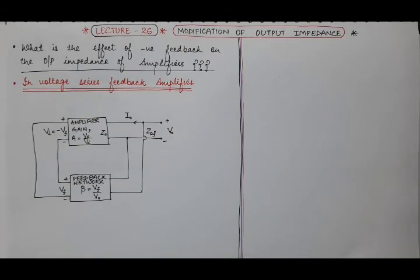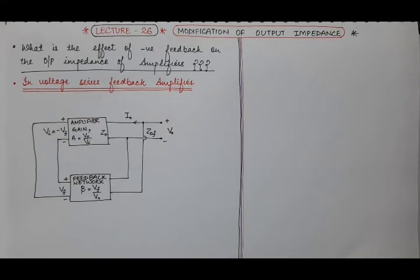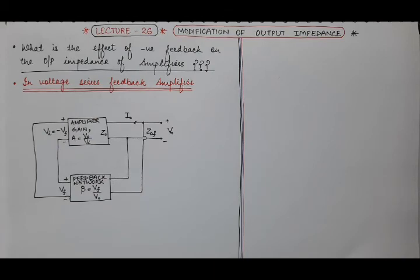Good morning students. In this lecture 26 we will discuss the effect of negative feedback on the output impedance of amplifiers. We will discuss this effect one by one in case of voltage series feedback amplifier, then voltage shunt feedback amplifier, then current series feedback amplifier, and at last in current shunt feedback amplifier.